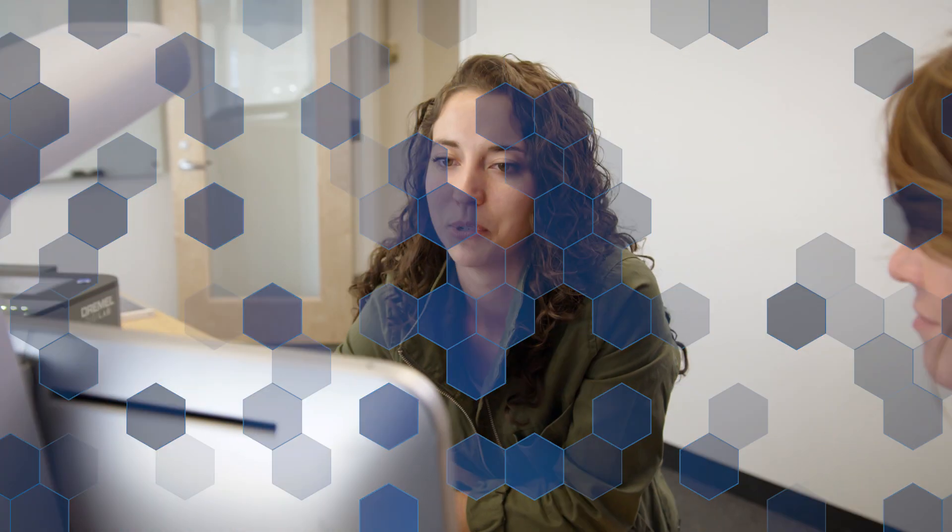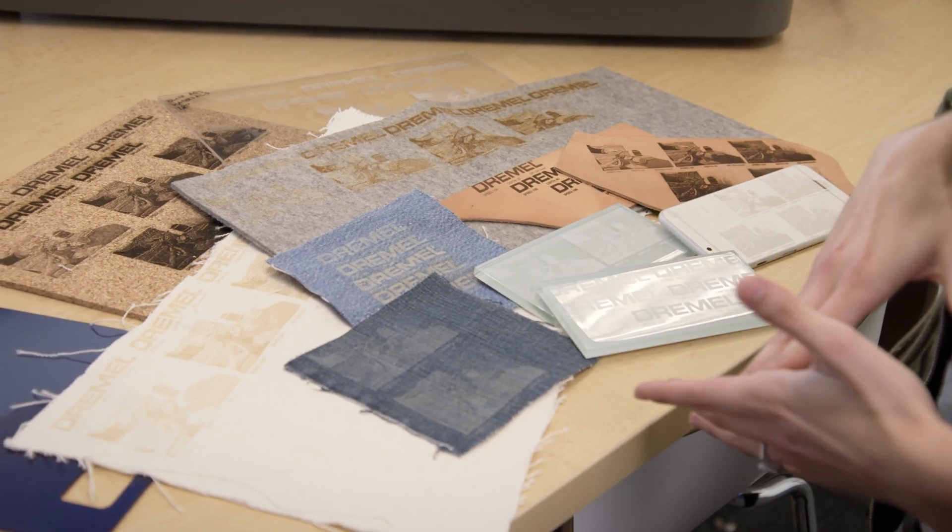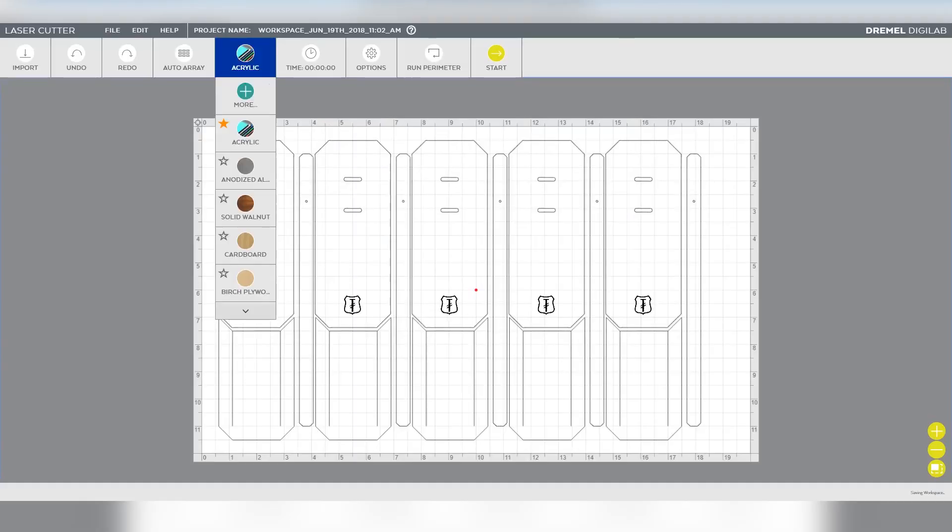One of the hardest parts of lasering, and I'm sure you guys are familiar with this, is knowing what settings to use whenever you're trying, especially a new material. What we've done on our end is tested several different materials, some of which you can see here. We want to identify at least a starting point for both engraving and cutting so that if you want to try a new material, you don't have to waste a ton of material in getting the right settings.